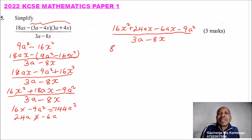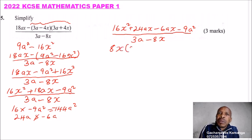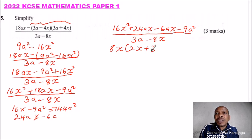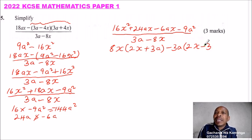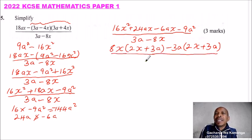We factorize here. 8x is common in the first two terms, so we factor out 8x and are left with 2x plus 3a, so that when you open up you get 16x squared plus 24ax. Here we can factor out minus 3a, so we will be left with 2x minus 3a, so that when you open the bracket it becomes minus for both terms. All this is divided by 3a minus 8x.